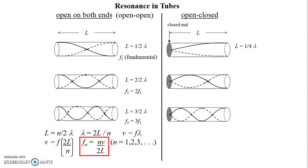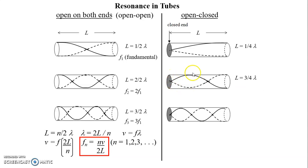Now let's figure out how many wavelengths fit in each tube. The first one is a quarter of a cycle — going from the node up to the antinode, from equilibrium up to crest, is a quarter wavelength. The second is three quarters of a wavelength: quarter, half, three quarters. The third is five quarters: quarter, half, three quarters, full, and one extra quarter wavelength. Notice the difference between harmonics is always half a wavelength — that's true for any standing wave or resonance.